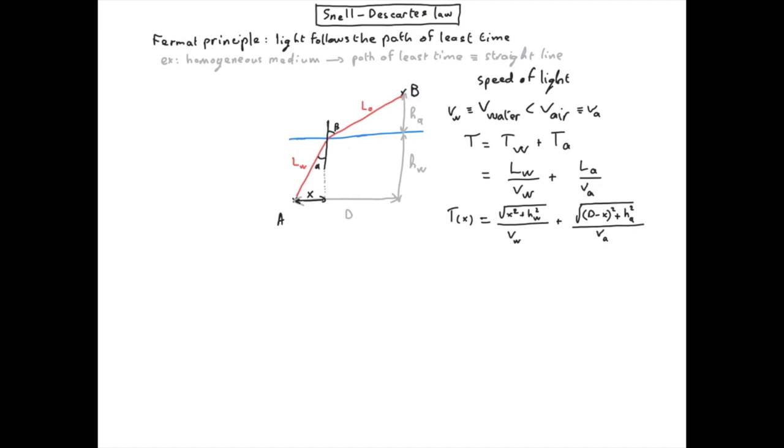So if we look for the minimum time, what we need is to search for stationary point of this function t of x. That is, we need to search for point such that the derivative of t according to x is 0.